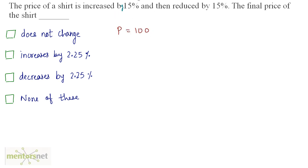We are increasing the price by 15%, so P1 will be equal to 100 plus 15% of 100, that means 100 plus 15. So the new price will be 115 rupees, and then this price is reduced by 15%.